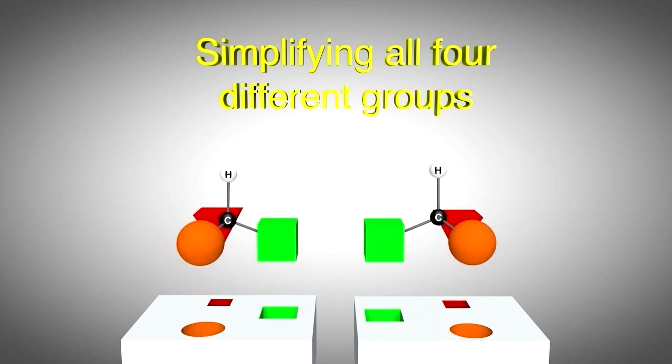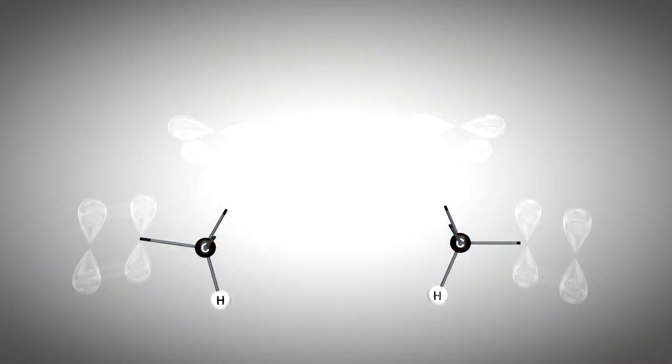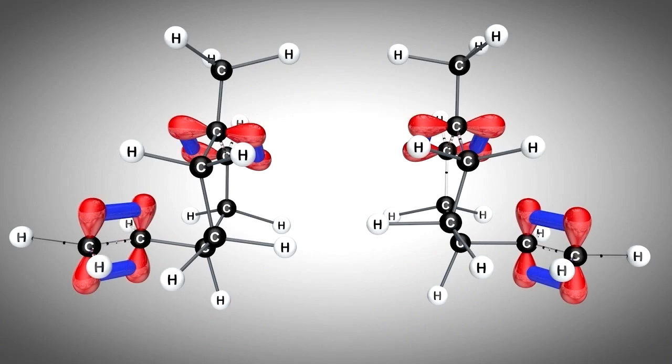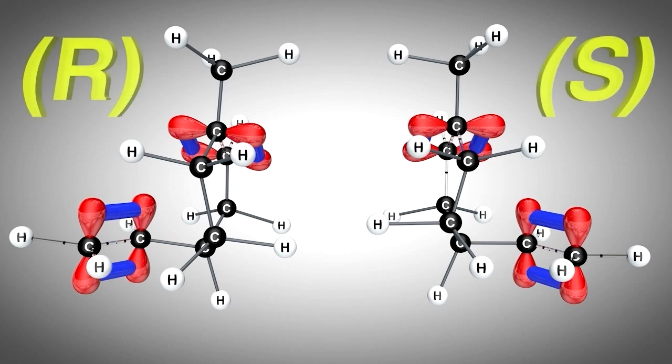Thus, how atoms within a molecule are oriented in three dimensions is very important when interacting with biological systems and is worth our efforts to explore and master. To differentiate between the two similar molecules, we must use the stereochemical modifiers R and S.